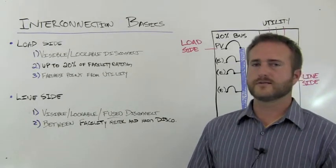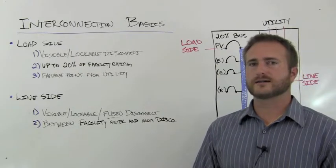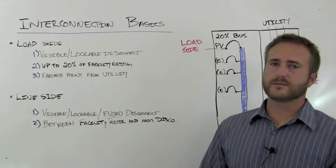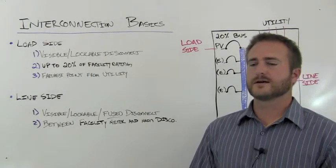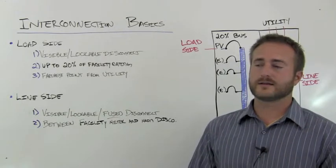Line side, you're also going to need a visible lockable disconnect, but this time it's going to have to be fused because you're not connecting in a breaker. You're connecting directly to the bus. And you're also going to be connecting in between your facility's main generation meter and their disconnect.